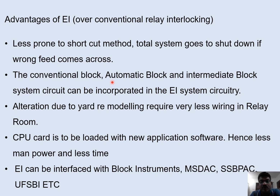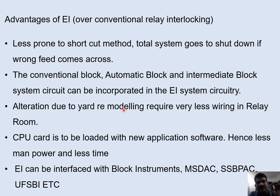The conventional block instrument — whether double line block instrument, DIADO, or any block instrument — can be interfaced with the EI. Conventional block, automatic block, and intermediate block systems can be incorporated directly into the EI system circuitry. Any alterations in the yard due to remodeling require very less wiring in the relay room. For example, if a new point is provided, just one NWKR is brought inside and an input is given to the EI — the rest is all software-based with no hardware wiring required. The CPU card is loaded with new application software whenever there is remodeling. Hence less manpower and less time is required.